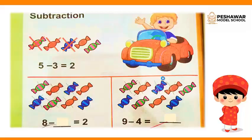Let's start the subtraction with me. We have 5 candies here. We minus 3 from them — minus 1, 2, 3. 2 candies are left. So 5 minus 3, we have 2. 2 candies.